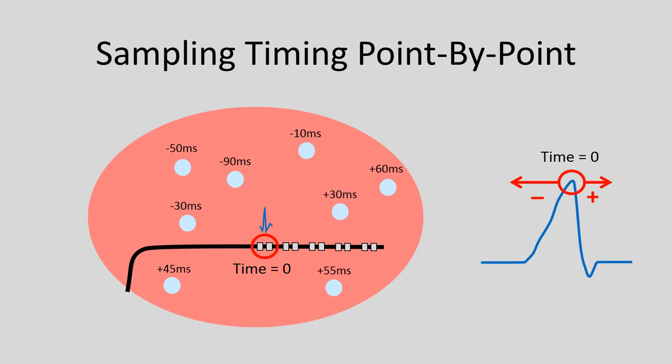You move your mapping catheter to other places throughout the chamber, and at every location you'll have a number — either negative or positive — depending on whether that spot activation-wise is earlier or later than your reference. This is an activation map, but it's hard to scan each number, which is why three-dimensional mapping systems have adopted color conventions that make it much easier to quickly assess the information.